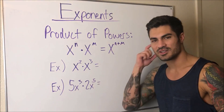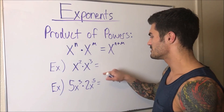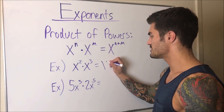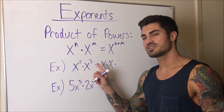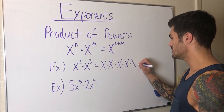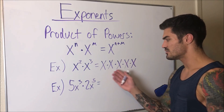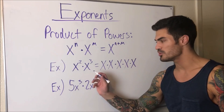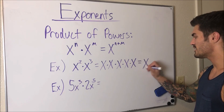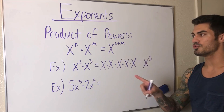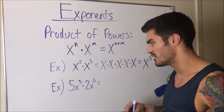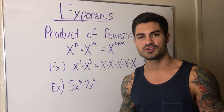Let's look at an example: x² times x³. That means x times itself twice — x times x — multiplied by x times itself three times. Because multiplication order doesn't matter, we really just have five x's: x times x times x times x times x. That can be rewritten as x to the fifth, which checks out with our rule of adding the exponents: 2 + 3 = 5.